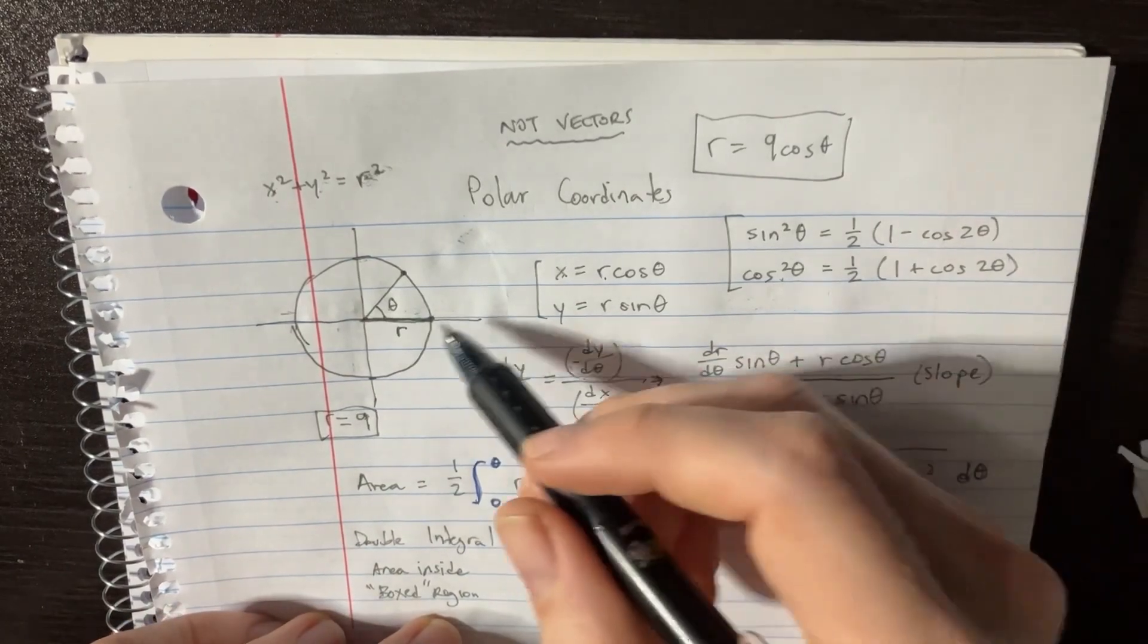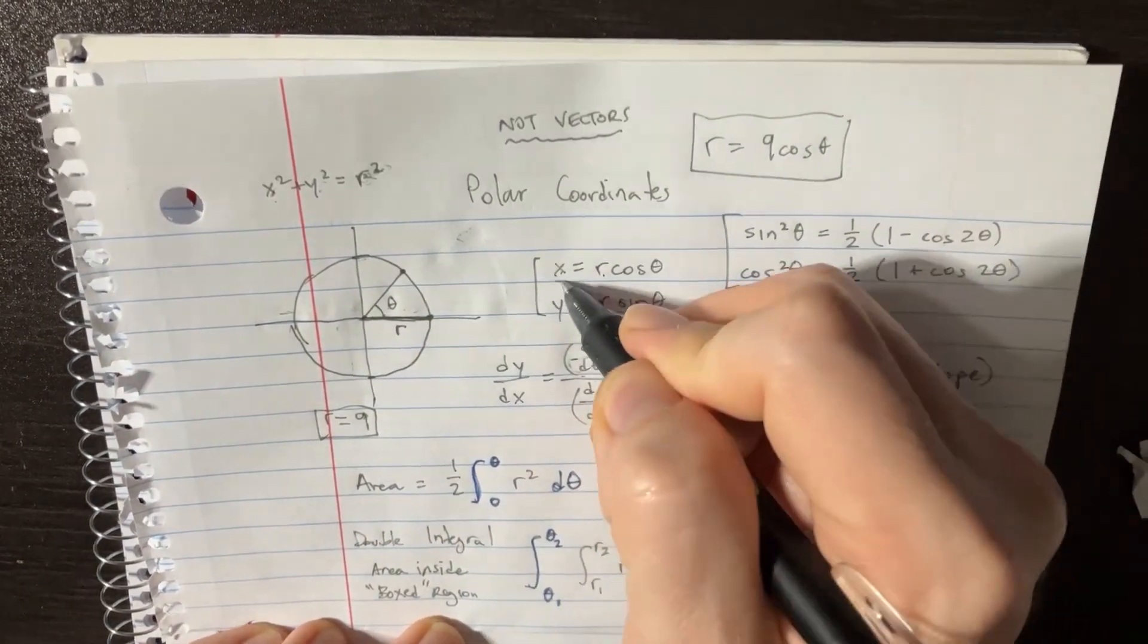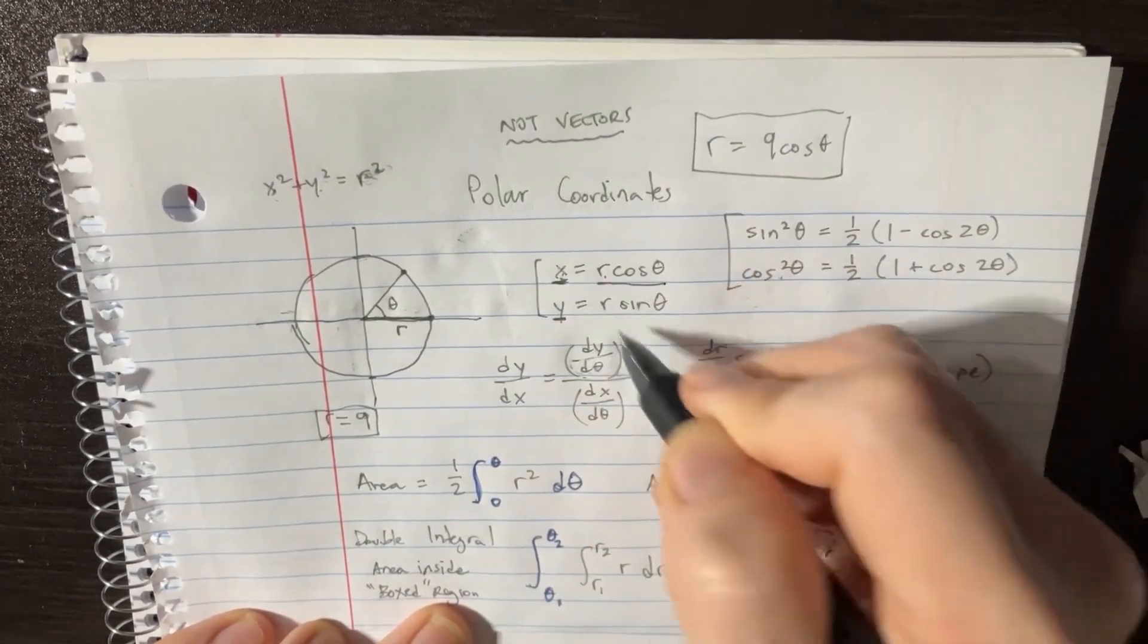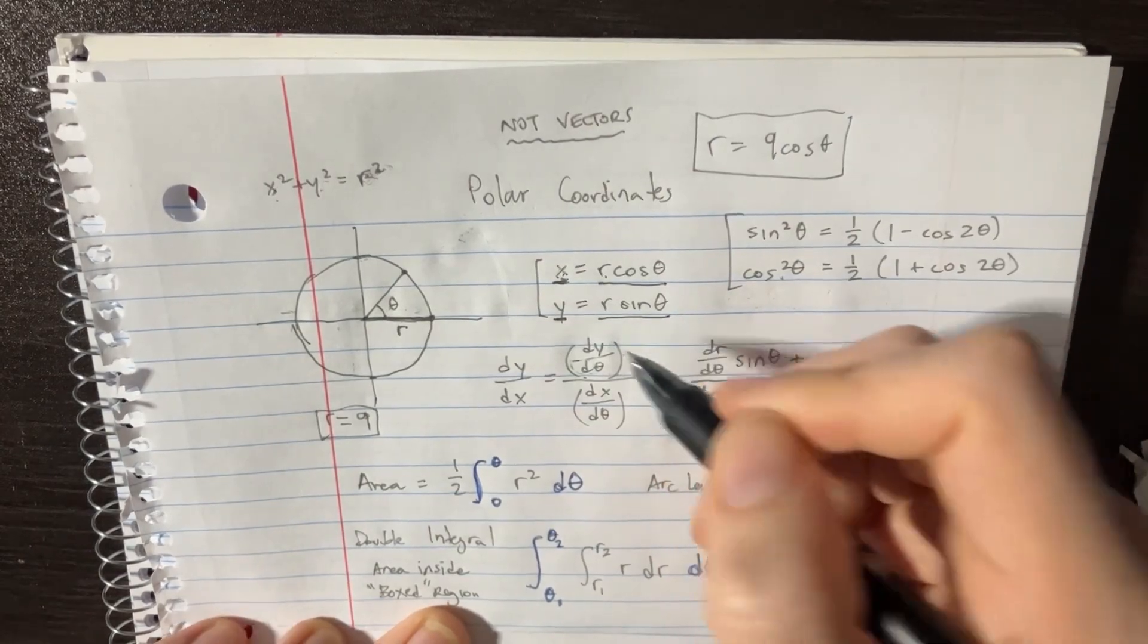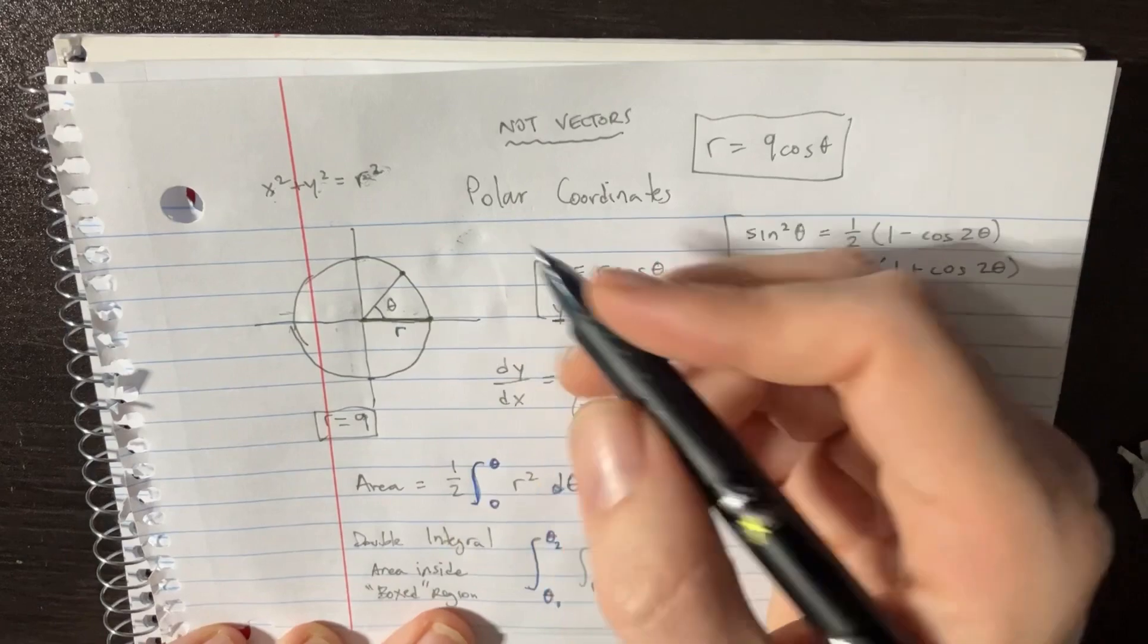When you're trying to represent x and y, all you got to do is just say r cosine theta for x and r sine theta for y. You may have seen this in things like vectors, but just so you know these are not vectors, these are just points.